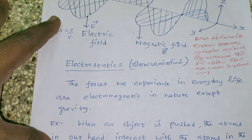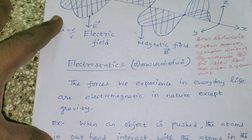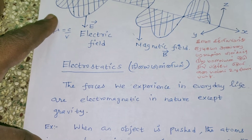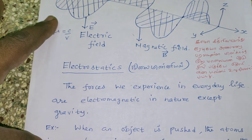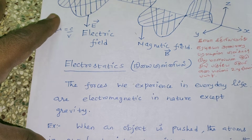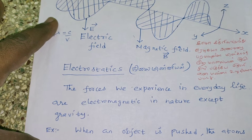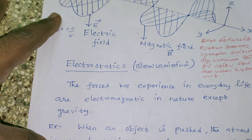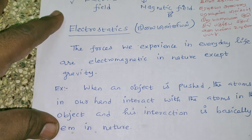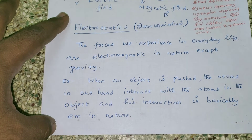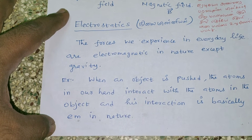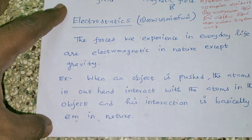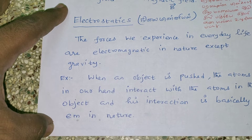The first point: forces experienced in our day-to-day life are electromagnetic in nature, except gravity. For example, when an object is pushed, the atoms in our hand interact with the atoms in the object, and this interaction is basically electromagnetic in nature.